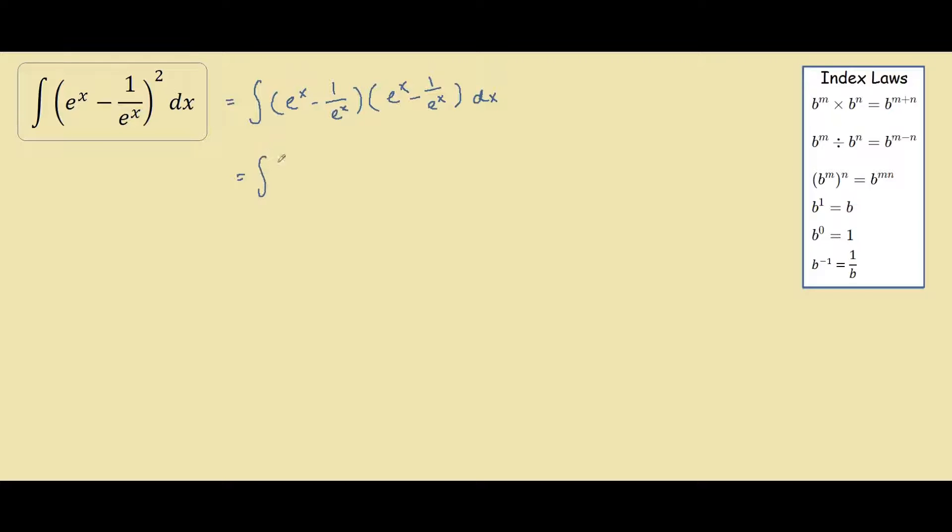Expanding this out, we get the integral of e^x times e^x. That will give us e^(2x) plus e^x times negative 1/e^x which will cancel out, giving us negative 1. And we do this two times, so negative 2.